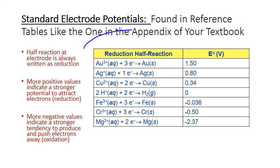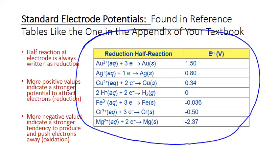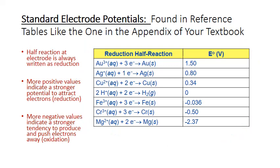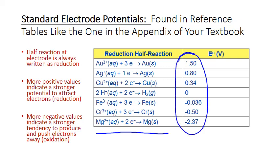Here's a sample of a few standard electrode potentials, which can be found in reference tables in your textbook or online. In the textbook, there's an appendix at the back dedicated to standard electrode potentials. The half reactions in these tables are always written in the reduction form, with electrons on the reactant side, because these half reactions are always at the cathode where reduction occurs. The voltage values represent the potential for that particular half reaction to draw electrons towards itself. The more positive the value, the stronger the tendency to attract electrons and act as a reduction half reaction. Conversely, more negative values indicate a stronger tendency to push electrons away — in other words, to undergo oxidation.